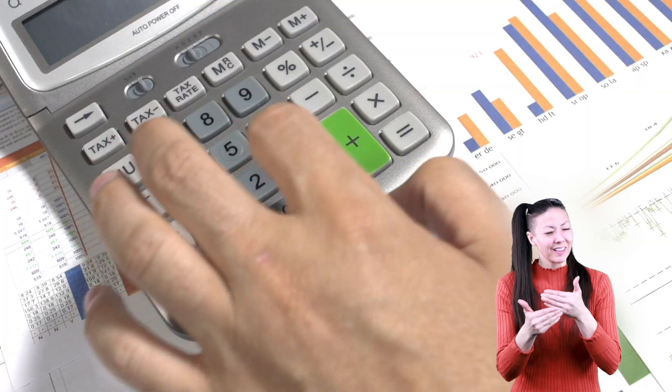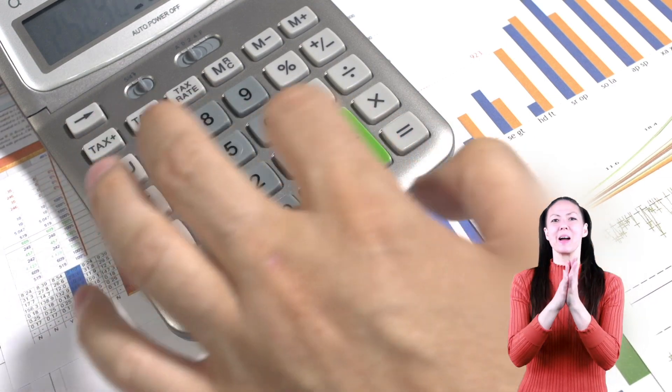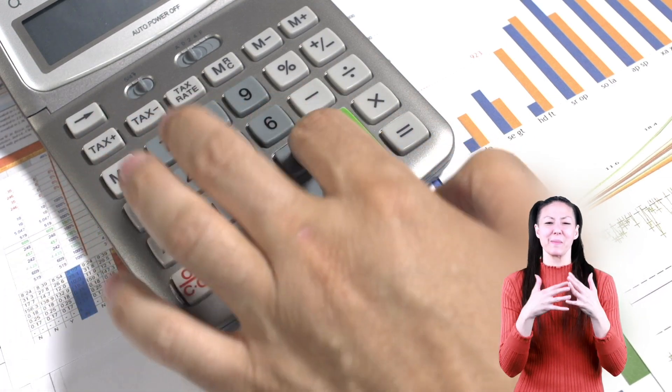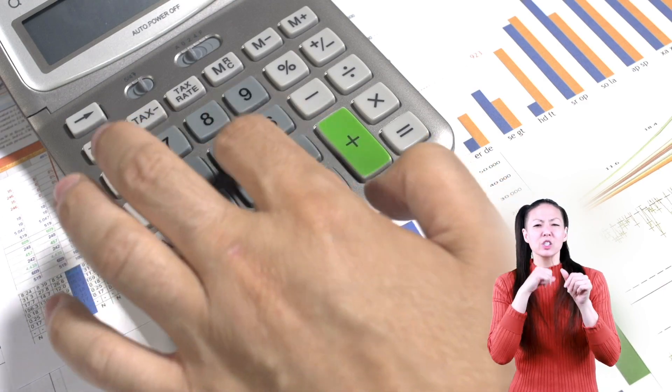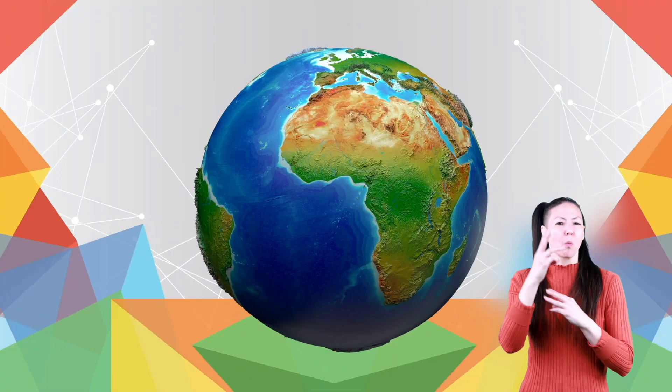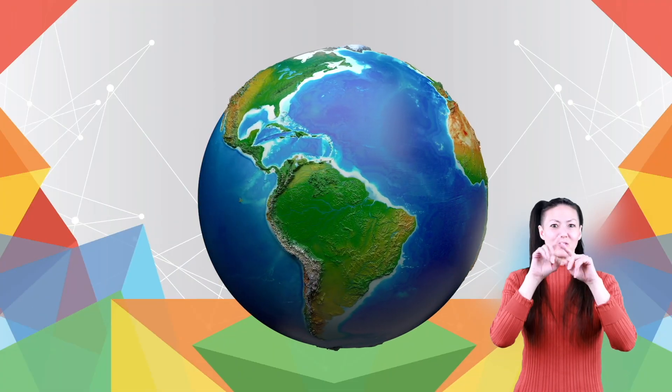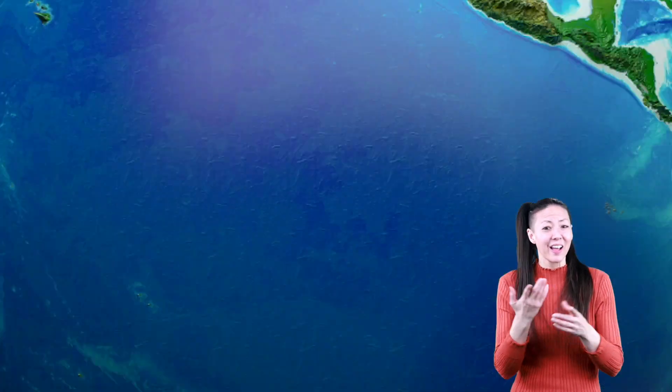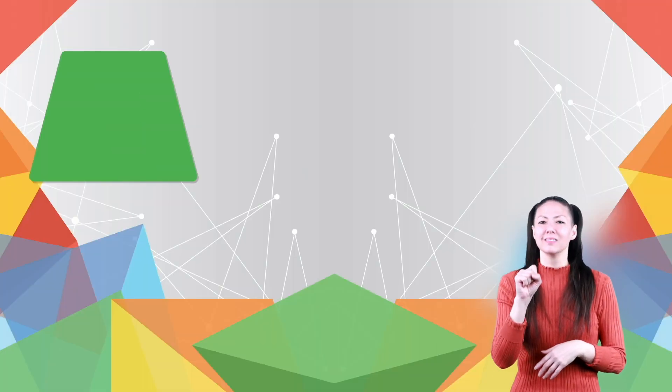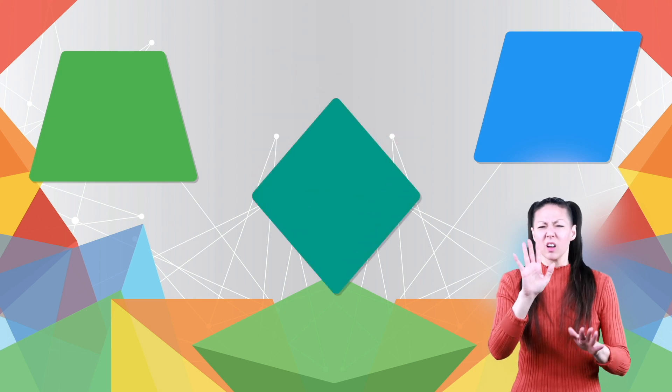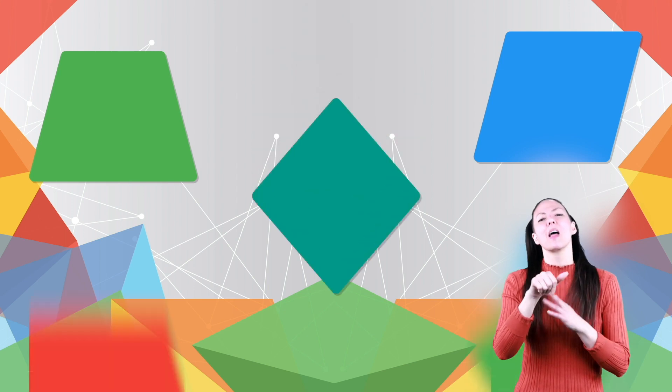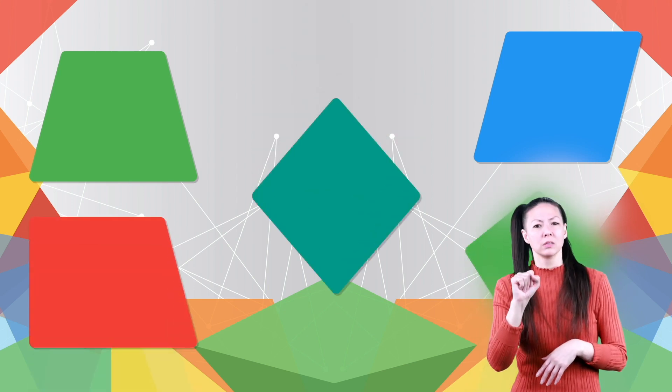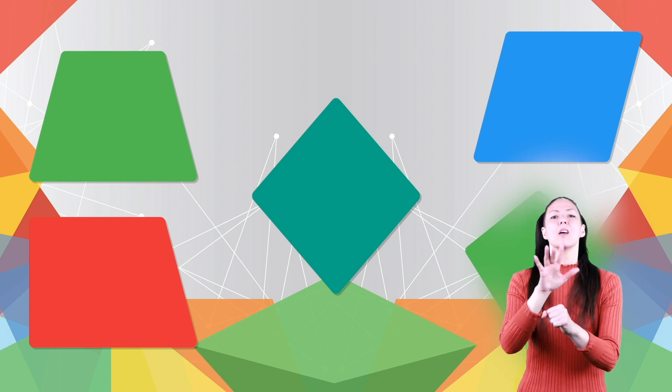It looks like you're getting the hang of the area, but before we send you off into the world to become an area calculating machine, there are a few other shapes we should probably cover, because the world is more than just rectangles, squares, and triangles, right? You've got trapezoids, parallelograms, rhombuses or is it rhombi, and other quadrilaterals. All of these have an area, and all of them can be calculated.